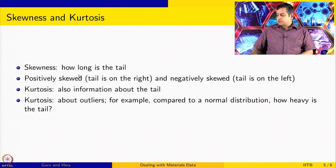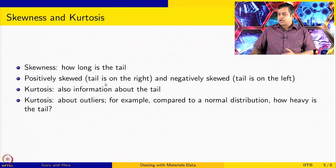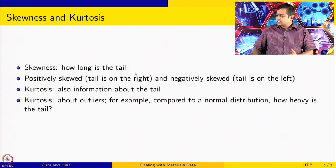In order to understand how this distribution works, it is important to know about skewness and kurtosis. Skewness tells how long the tail is. It is said to be positively skewed if the data has a long tail on the right, and negatively skewed if the tail is on the left side. For a normal distribution, the data has tails on both right and left side, and if it is nicely normally distributed, it is symmetric about the mean. If the data is skewed positively or negatively, you will see a longer tail either on the right or on the left.